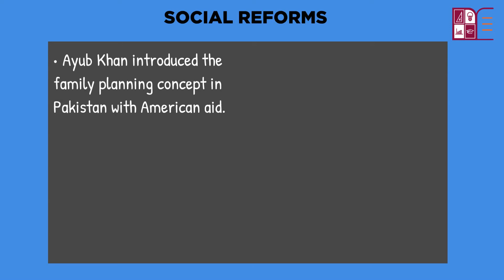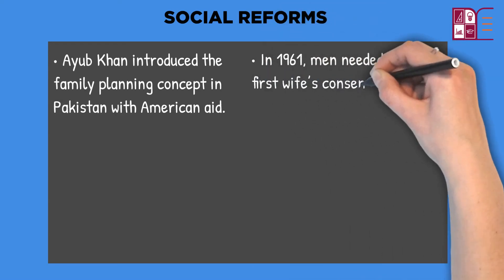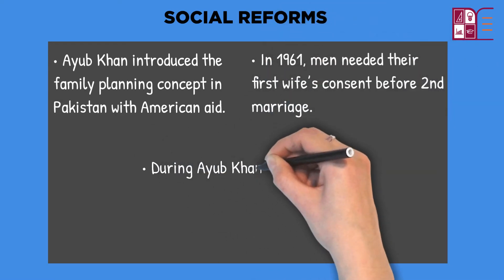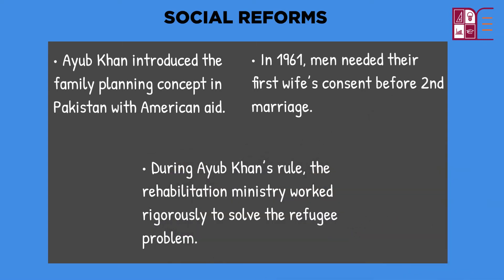Social Reforms: Ayub Khan introduced the family planning concept in Pakistan with American aid. The family planning initiative was immensely opposed by ulemas as they considered it against Islam. In 1961, all marriages and divorces needed to be registered, and men were required to take their first wife's consent before marrying another woman. During Ayub Khan's rule, the Rehabilitation Ministry worked rigorously to solve the refugee problem, setting up many housing societies to shelter refugees. Many schools and colleges were established and the curriculum was reorganized.